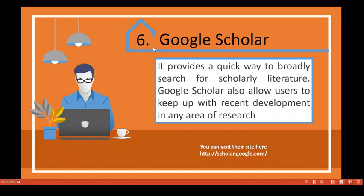Number six is Google Scholar — a must for every researcher. I would call it an academic social media site created by Google where you can upload and publish your articles so that people can search and find them. It provides a quick way to broadly search for scholarly literature including journals, conference proceedings, and patents.